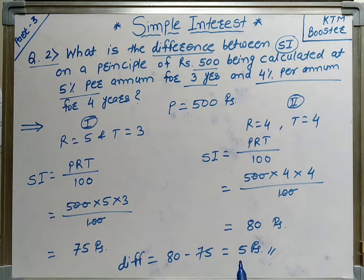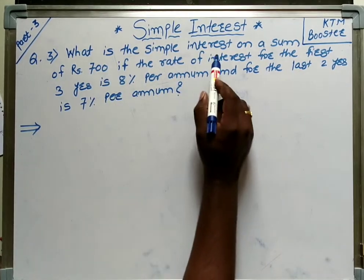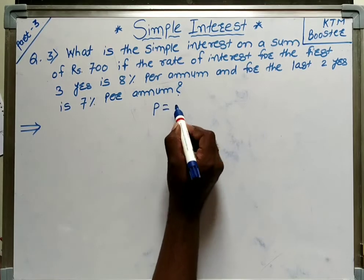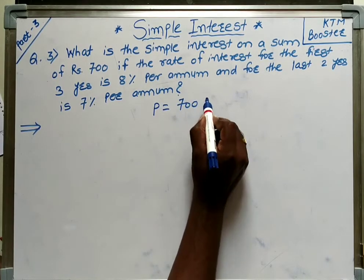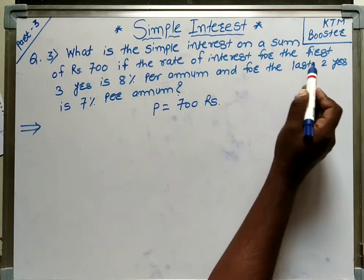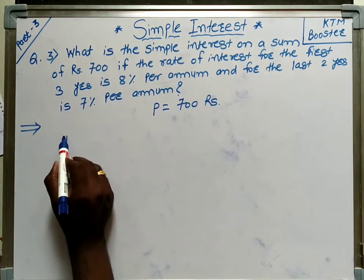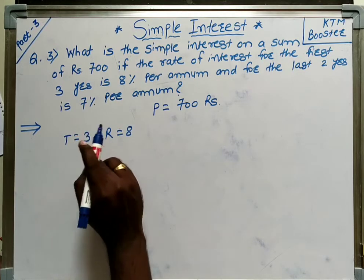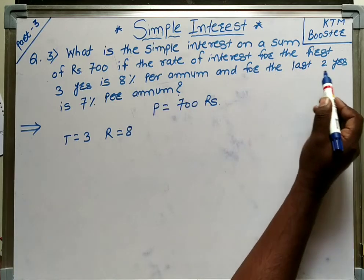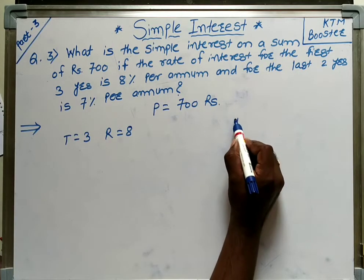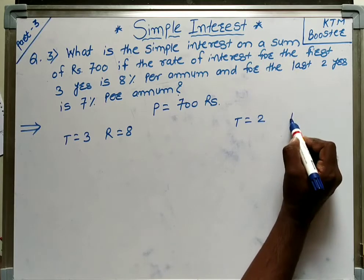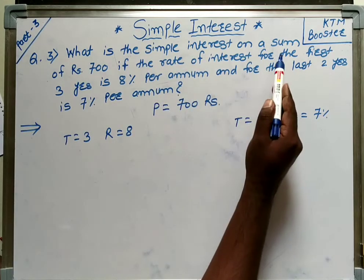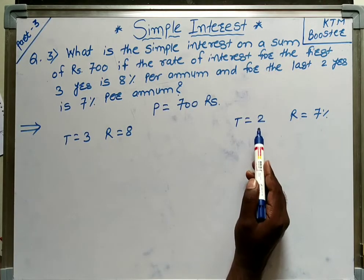That is the answer for question 2. Now we will see question number 3: what is the simple interest on a sum of 700 rupees? So the principal is 700 rupees. If the rate of interest for the first 3 years is 8% and for the last 2 years is 7%, we have to calculate the simple interest for 3 years and for 2 years separately.